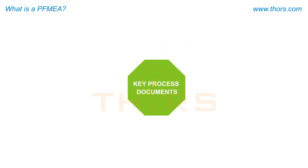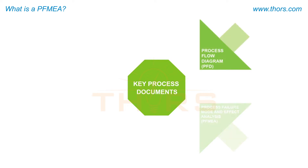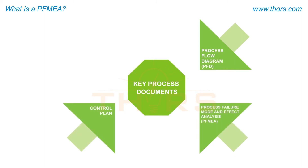The key process documents required to control and maintain manufacturing processes include a process flow diagram, a PFMEA, a control plan, and operator instructions.